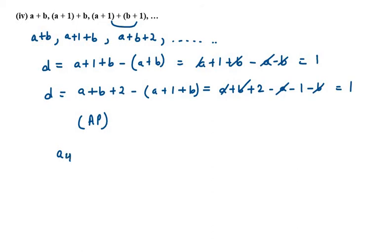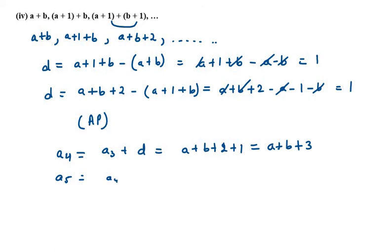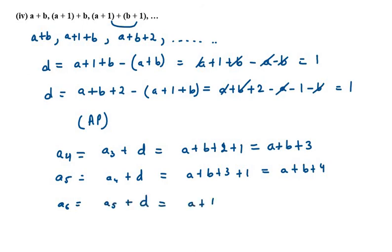Now we need to find the next terms. The fourth term will be the third term plus D: a+b+2 plus 1, giving a+b+3. For A5: A4 plus D, which is a+b+3 plus 1, giving a+b+4. For A6: A5 plus D, which is a+b+4 plus 1, giving a+b+5. You can see there is a gap of 1 in each case. This is your answer for the fourth part.